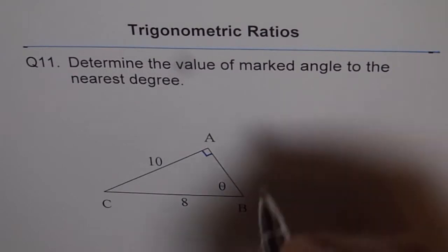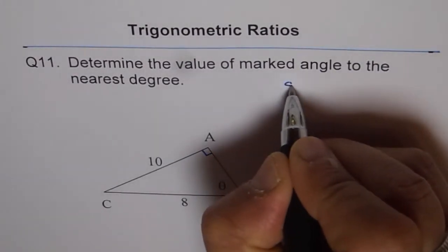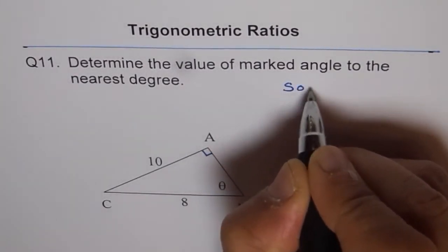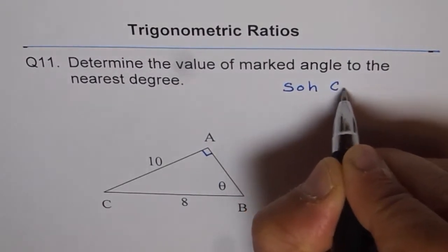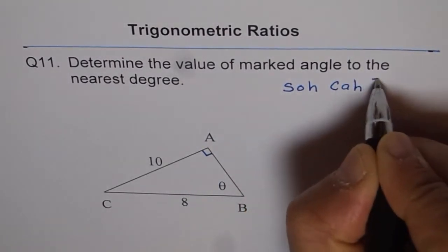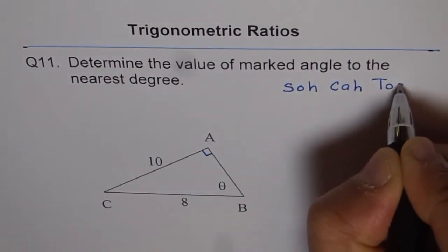Go back to SOH CAH TOA. Sine is opposite over hypotenuse, cosine is adjacent over hypotenuse, and tan is opposite over adjacent.